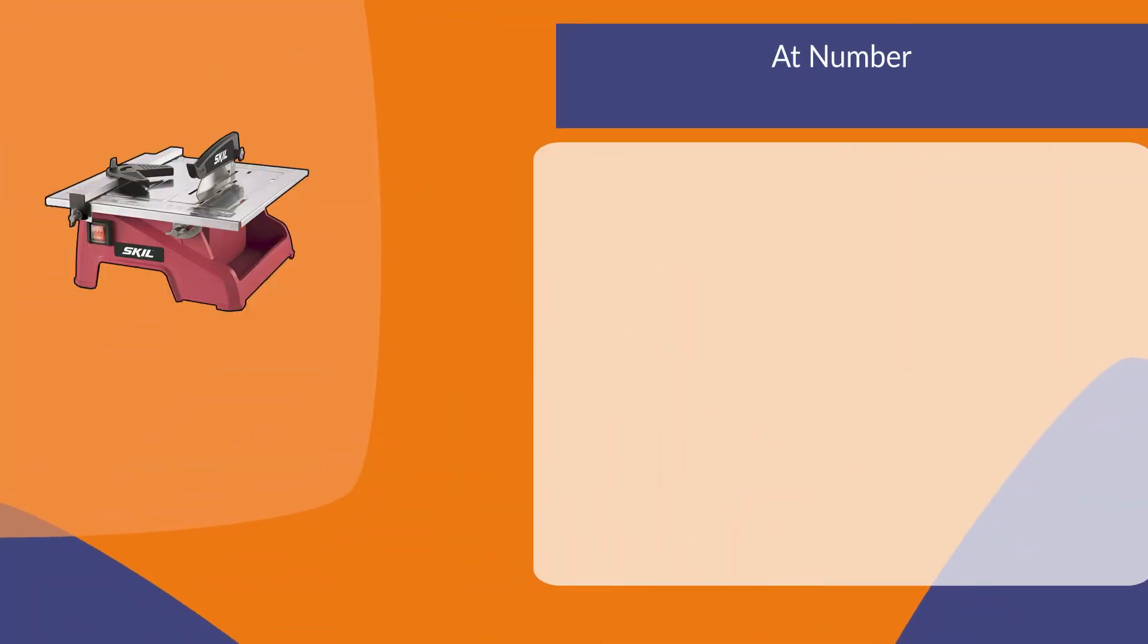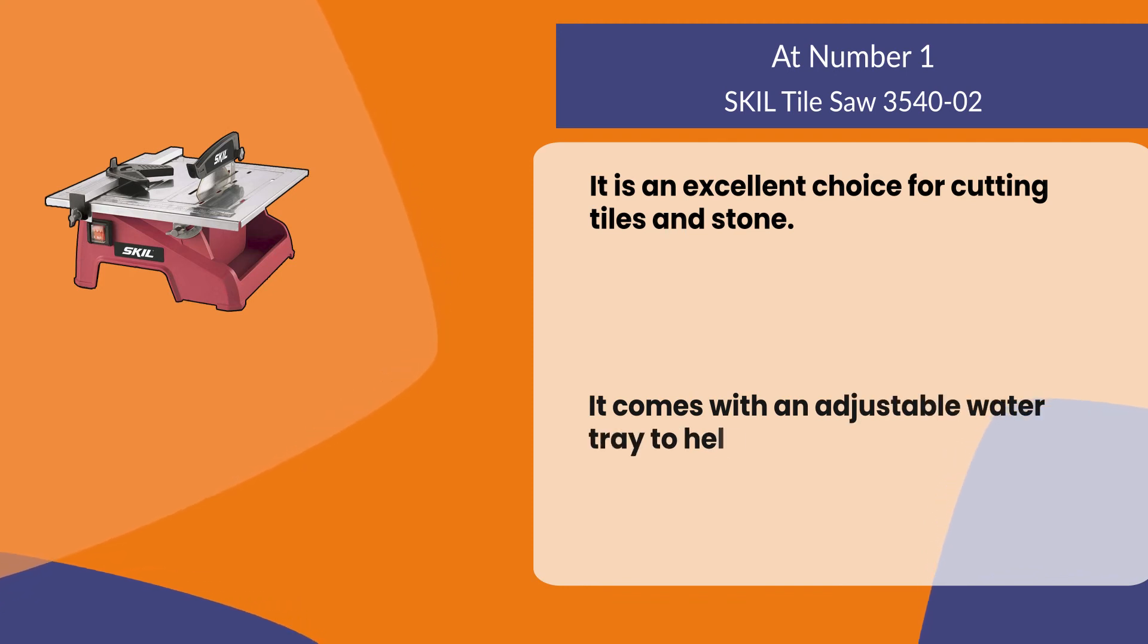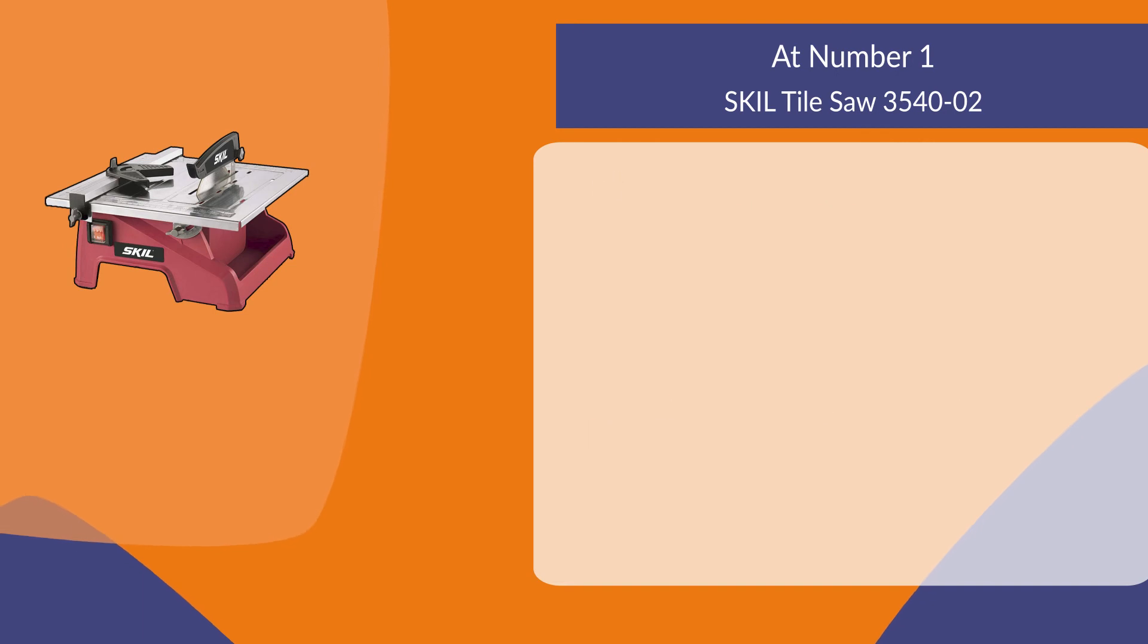At number one, Skill Tile Saw. It is an excellent choice for cutting tiles and stone. It comes with an adjustable water tray to help you maintain the right level of moisture. This saw has a rubberized grip handle making it easy to use and reducing vibration.